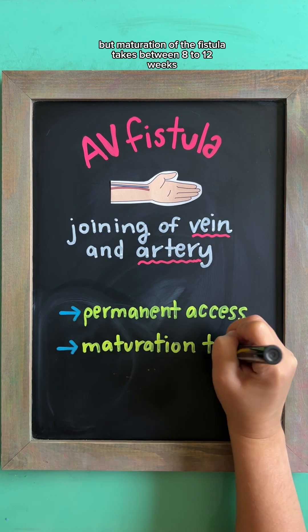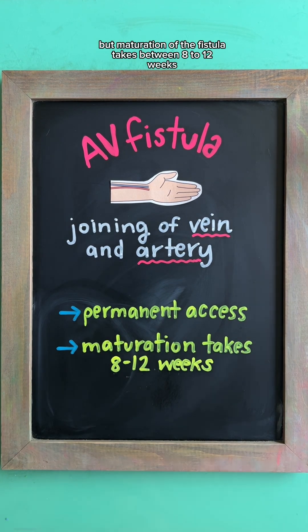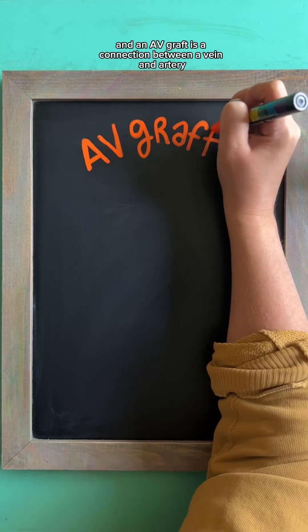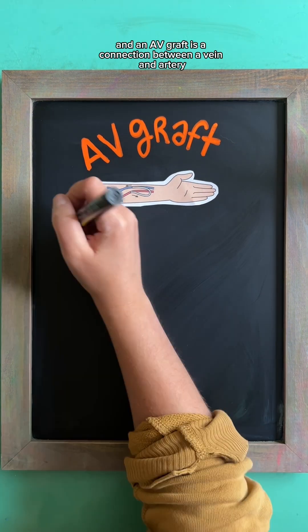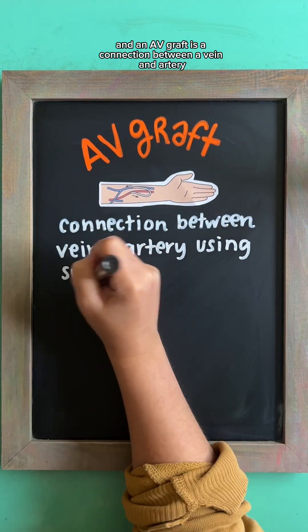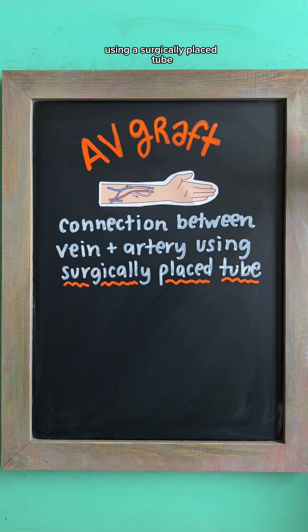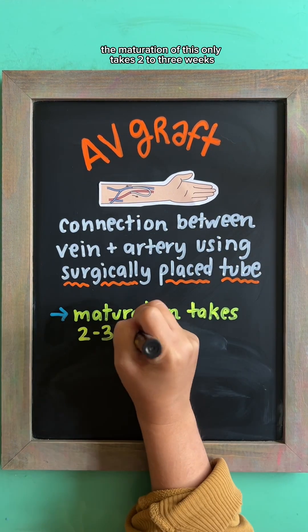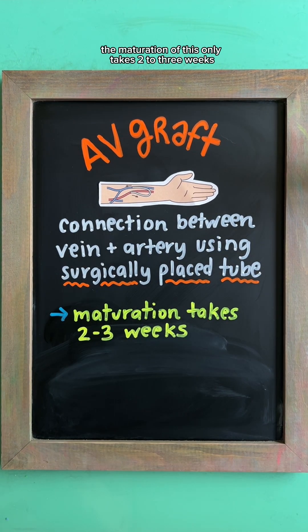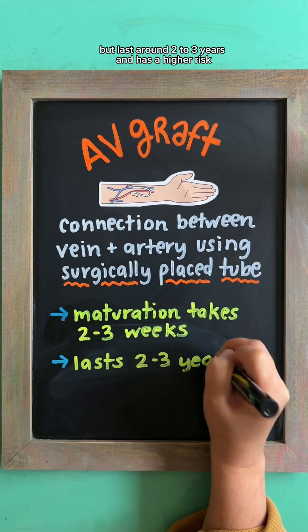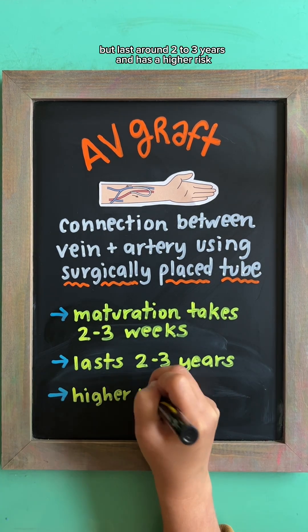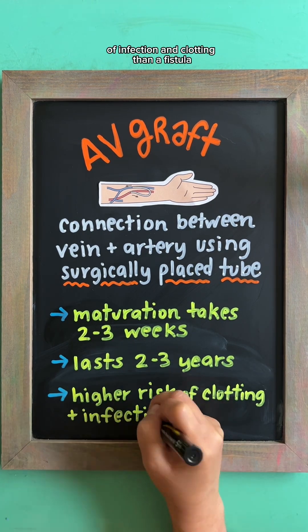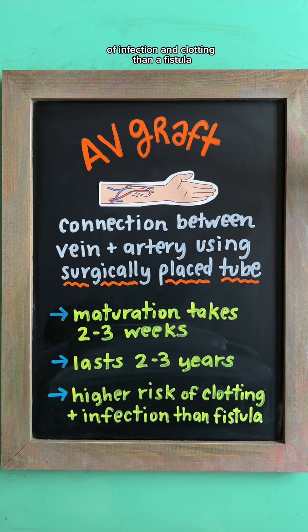Maturation of the AV fistula takes between 8 to 12 weeks. An AV graft is a connection between a vein and artery using a surgically placed tube. Its maturation takes only 2 to 3 weeks, but it lasts around 2 to 3 years and has a higher risk of infection and clotting than a fistula.